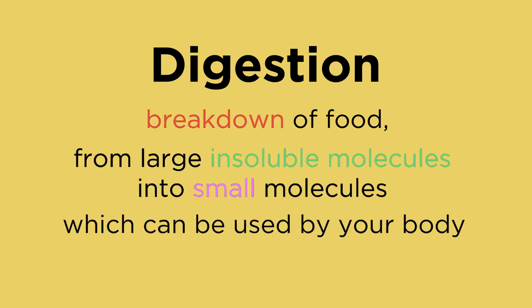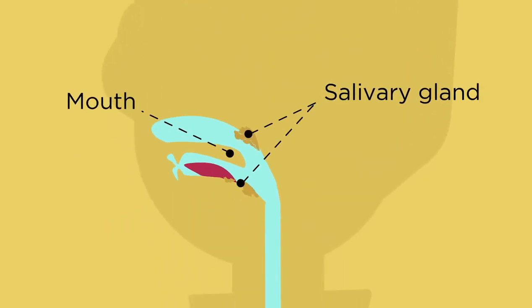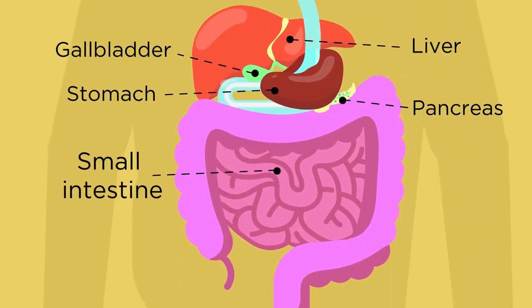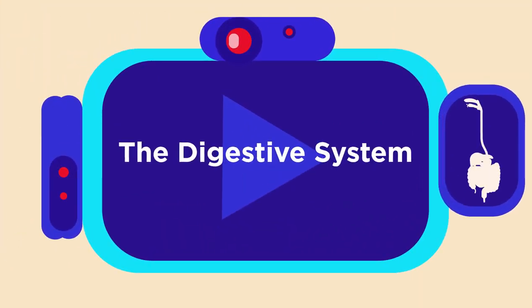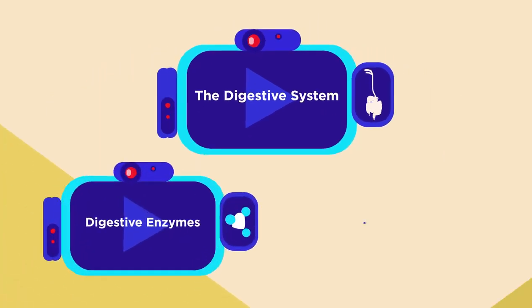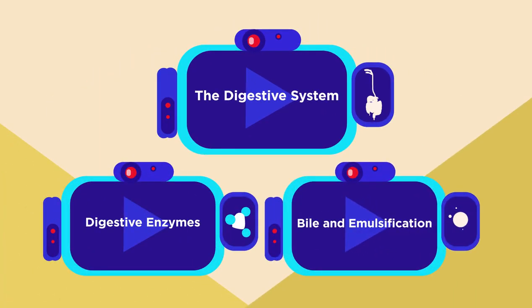Digestion involves many organs before it reaches the small intestine. For more information on the roles of these organs in the digestive system, watch this video. Enzymes and other chemicals such as bile break down food.